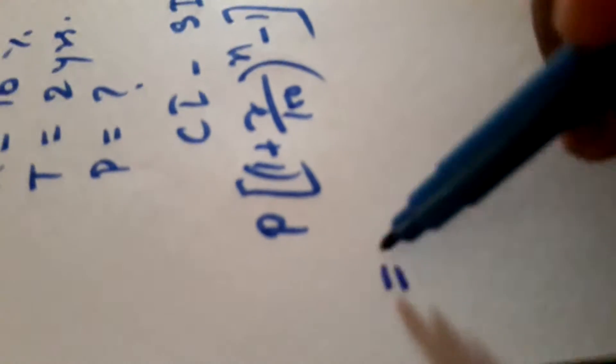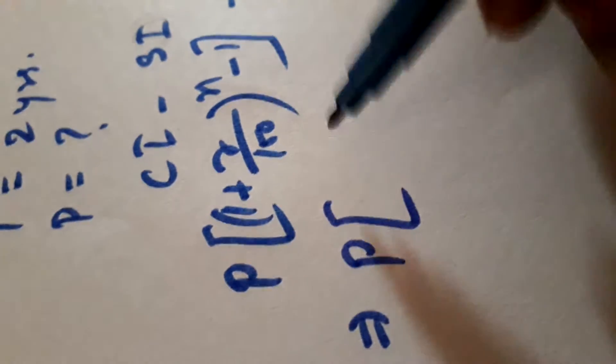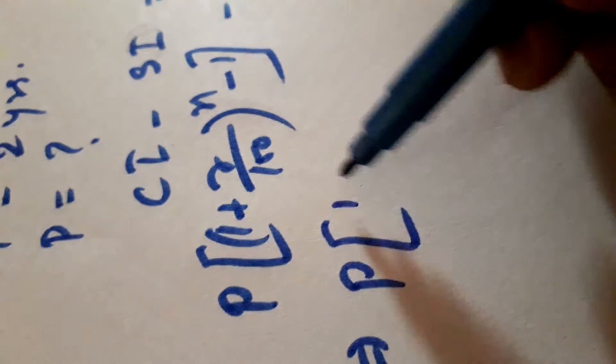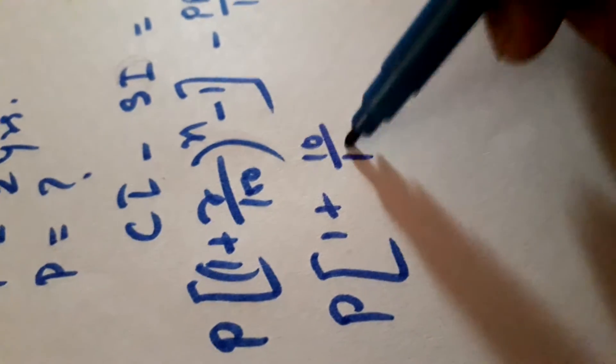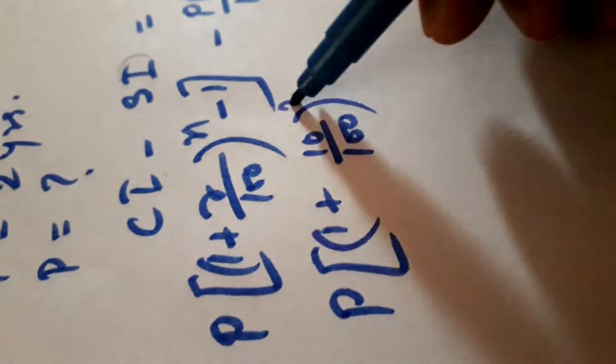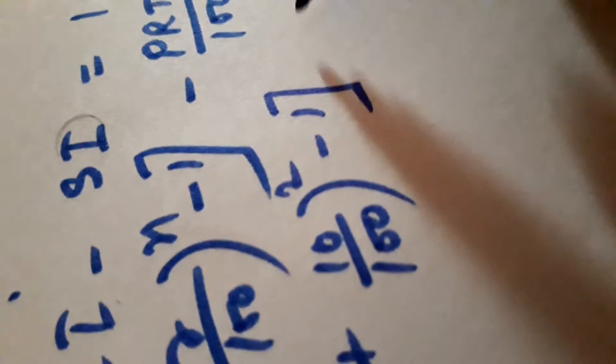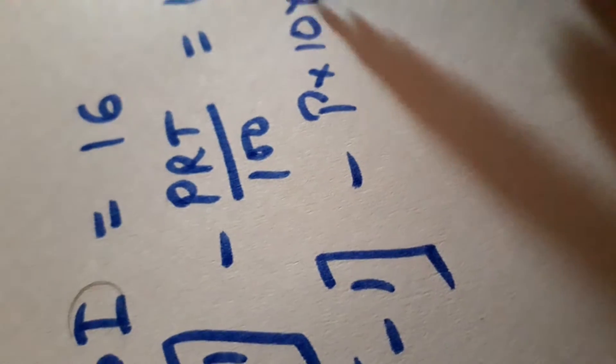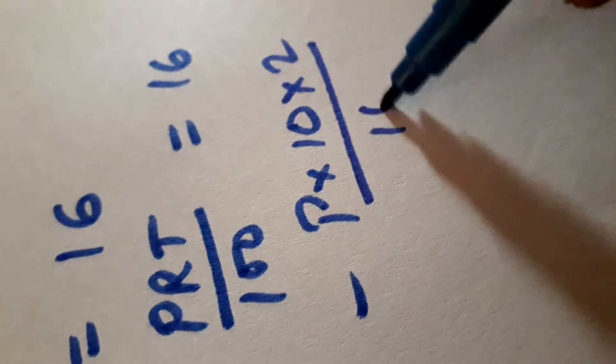Now we will put their respective values. We do not know the value of P. We have rate 10 percent, time is 2 years. Again here P into rate we have 10 percent, time is 2 year upon 100. This is equal to 16.